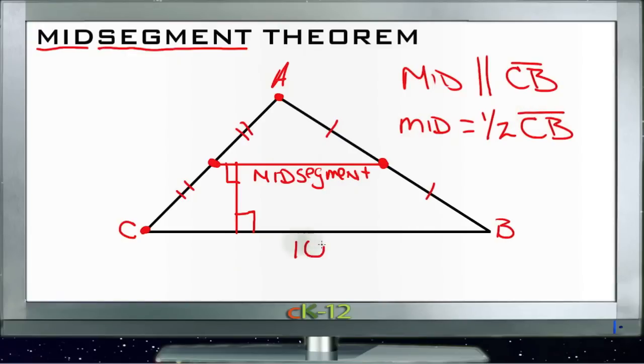So if I, for instance, knew that CB was 10 units long, then I'd know that the midsegment was 5 units long. Kind of a slick trick.